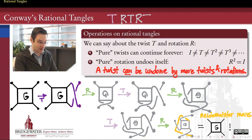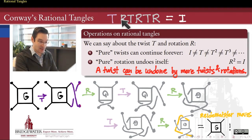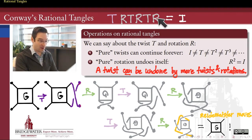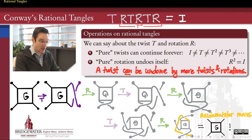Taking stock of what this means algebraically: the composition T·R·T·R·T·R is equal to the identity. So we've figured out how to undo a twist. We can undo a twist by rotating, twisting, rotating, twisting, and rotating. This combination of T's and R's is the inverse we were looking for for T. We can untwist a twist by adding this combination of more twists and rotations.